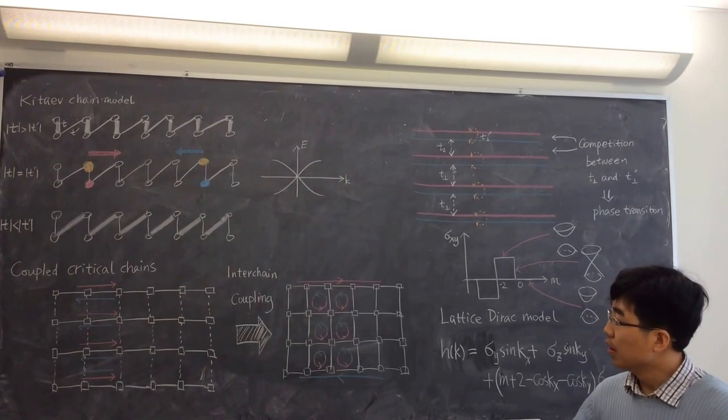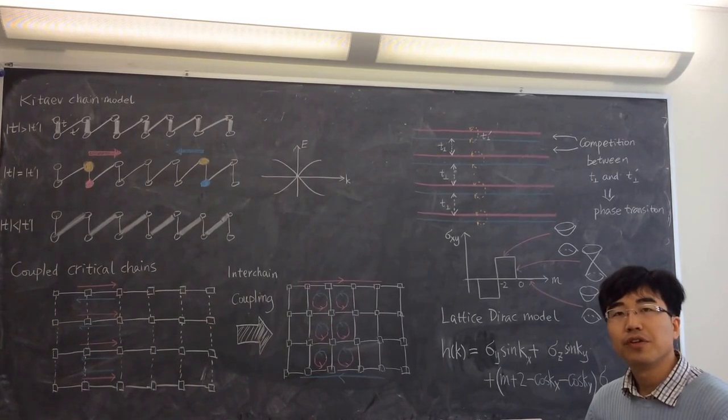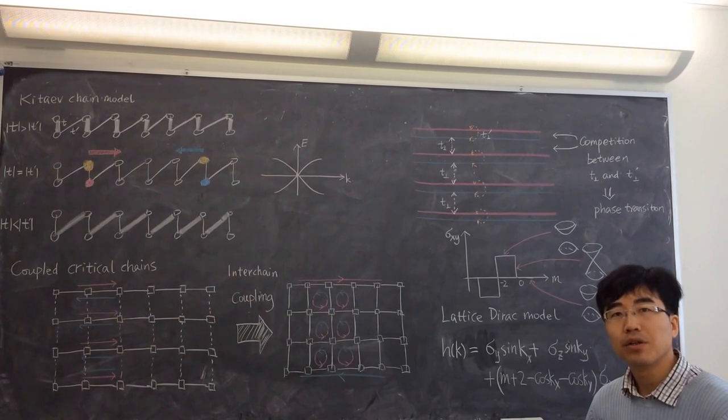So this is one example of the quantum anomalous Hall model. And there are other models, for example, the Haldane model, which you will learn later in this course.